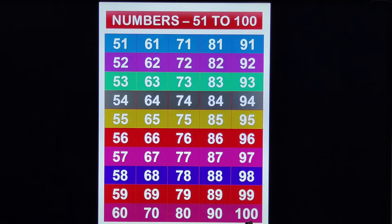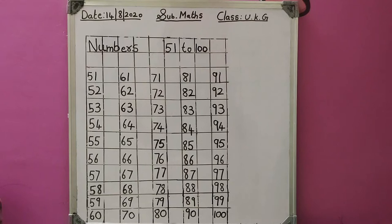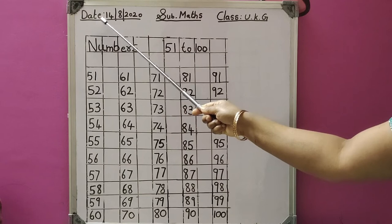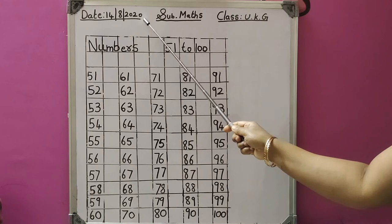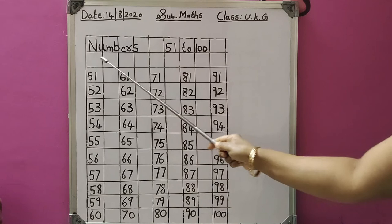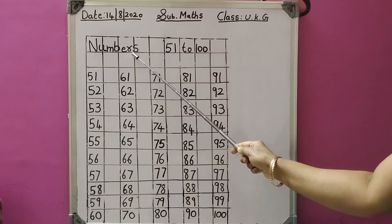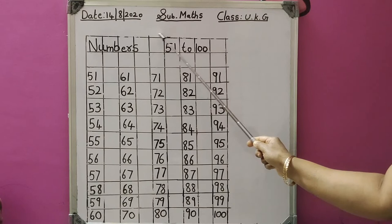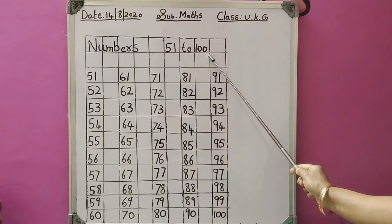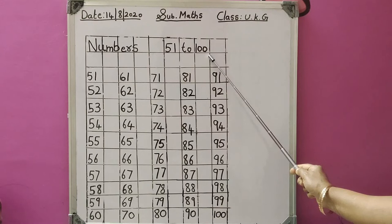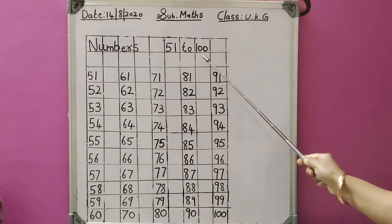Now I will show you how to write the numbers. First write the date: 14/8/2020. Then in the first line write 'Numbers' — N, U, M, B, E, R, S. Leave 1 square, then write 51, then next square: 'to' — T, O, 2. Next square: 100. After writing the heading, leave 1 line.